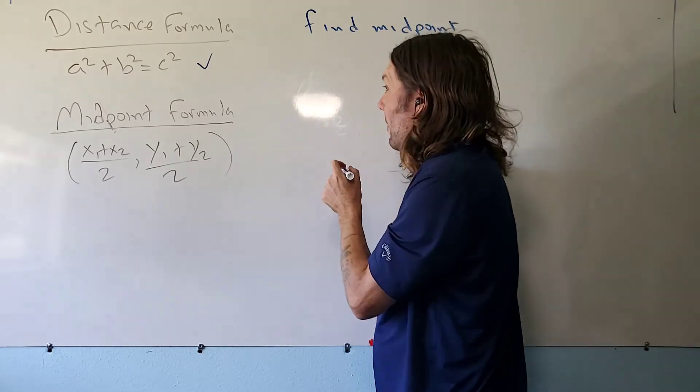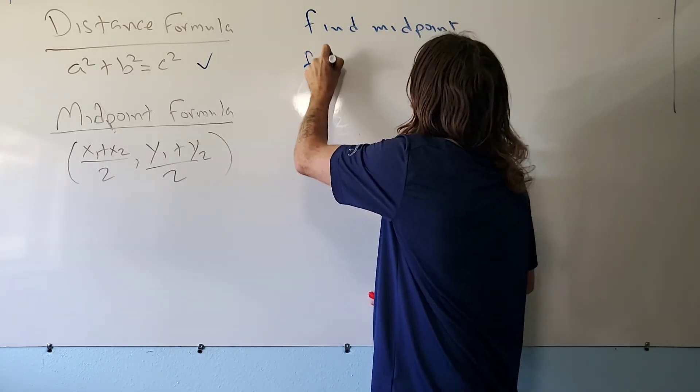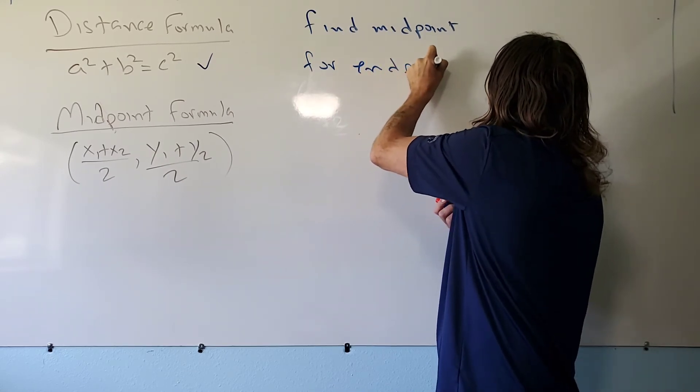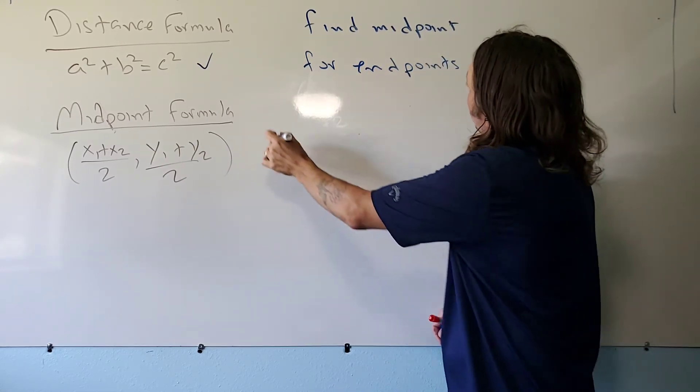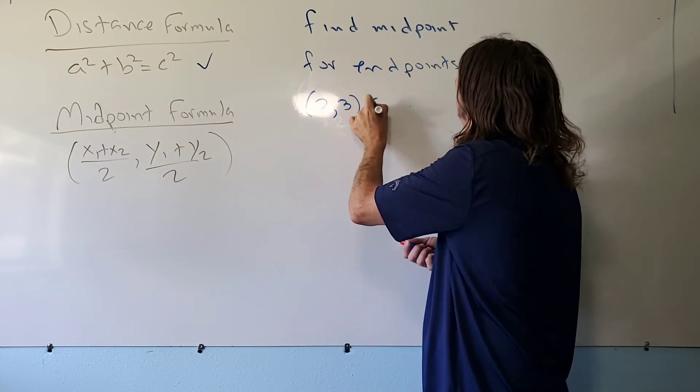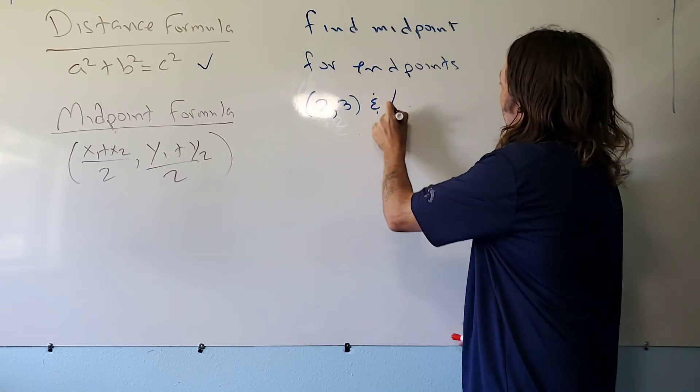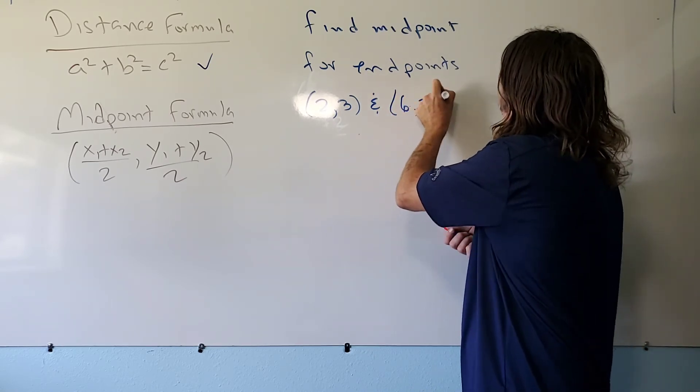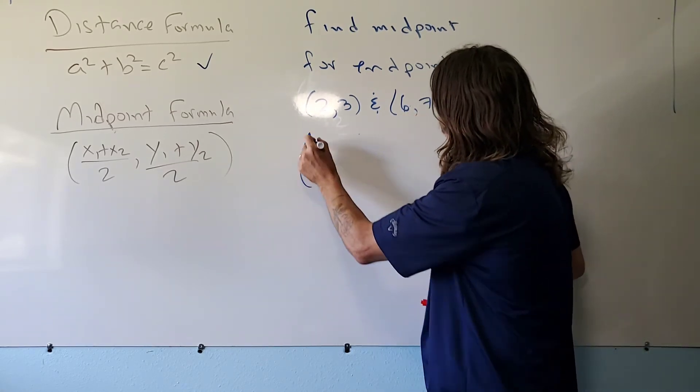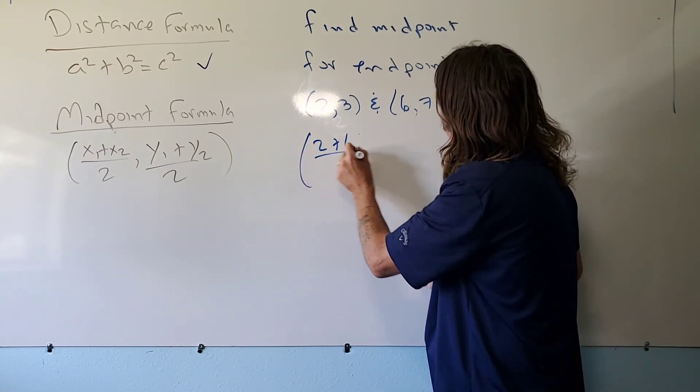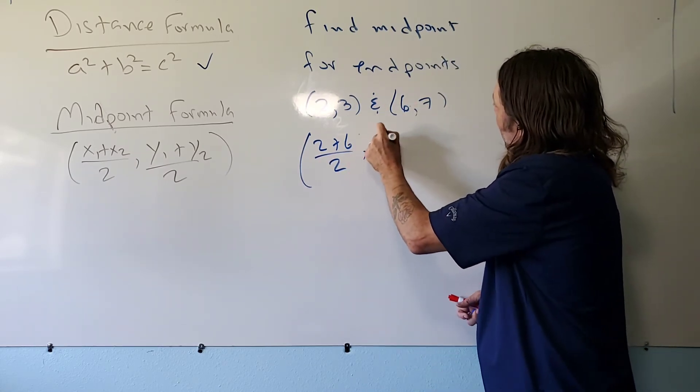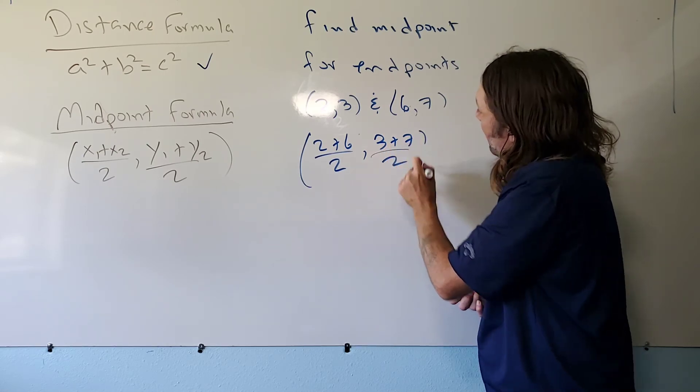Here we go. So let's find the midpoint of endpoints two, three and six, seven. So again, I use my formula. I add my x's together and we're going to take half of that. I'm going to add my y's together and I'm going to take half of that.